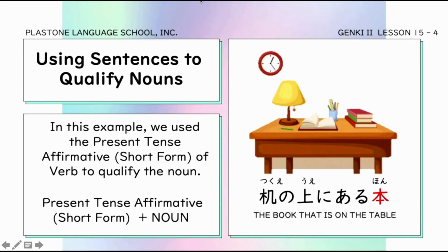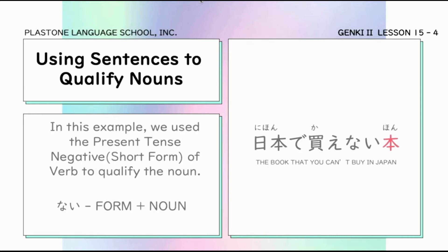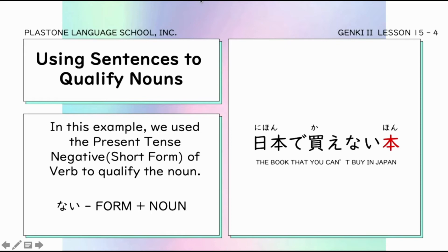Tsukue no ue ni aru hon — or libro na nasa ibabaw ng mesa. Pwede rin tayong gumamit ng negative form as long as it is in short form. For example, nihon de kaenai hon — or libro na hindi mo mabibili sa Japan.